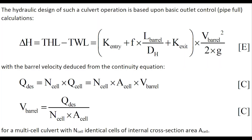The hydraulic design of such a culvert is based upon basic outlet control calculations, namely the energy losses and the continuity equation, shown here for a multi-cell pipe culvert or box culvert with identical cells of internal cross-section area.